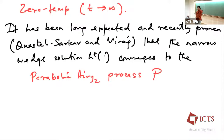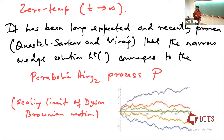You should think of T as an inverse temperature, so T going to infinity implies the temperature going to zero. As has long been conjectured and recently proven in two simultaneous works — by Quastel and Sarkar and by Virag — the narrow wedge solution H(T,0) of the KPZ equation, as T goes to infinity, converges to what is known as the parabolic Airy process. This turns out to be the scaling limit of Dyson Brownian motion. If you take an n×n Gaussian matrix whose entries evolve as Brownian motions, the eigenvalues evolve, and the top curve traces the trajectory of the largest eigenvalue. The zero temperature limit of the KPZ equation is this scaling limit.